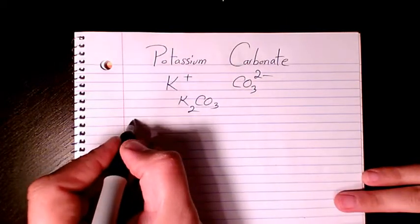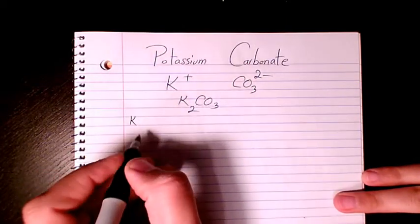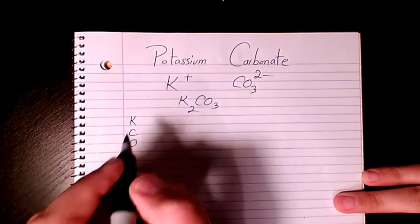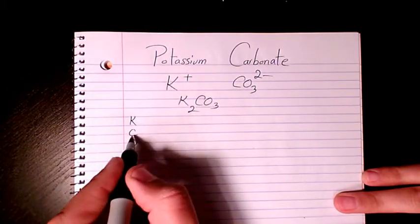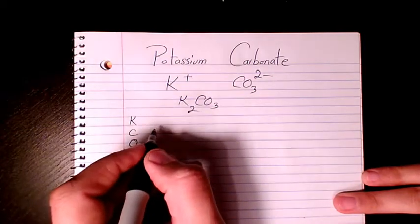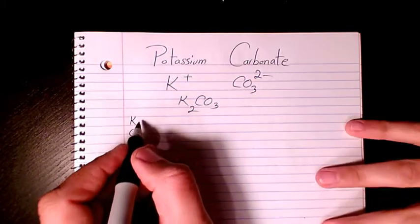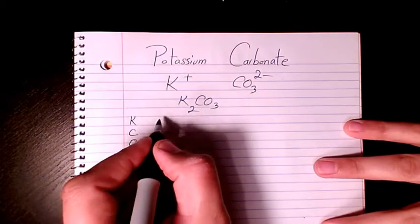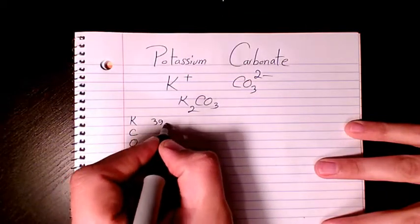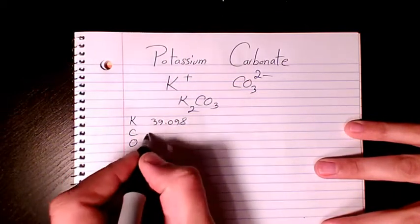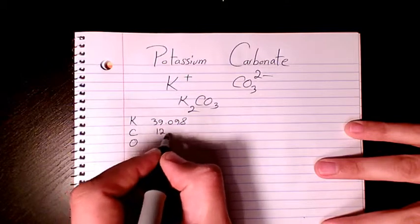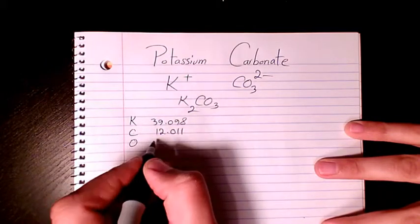Now if I want to calculate the molar mass, I need to first of all list all the elements. We have potassium K, carbon C, oxygen O. And then I need to find out the atomic mass of each of them, which is 39.098 for potassium, carbon is 12.011, and oxygen is 15.999.